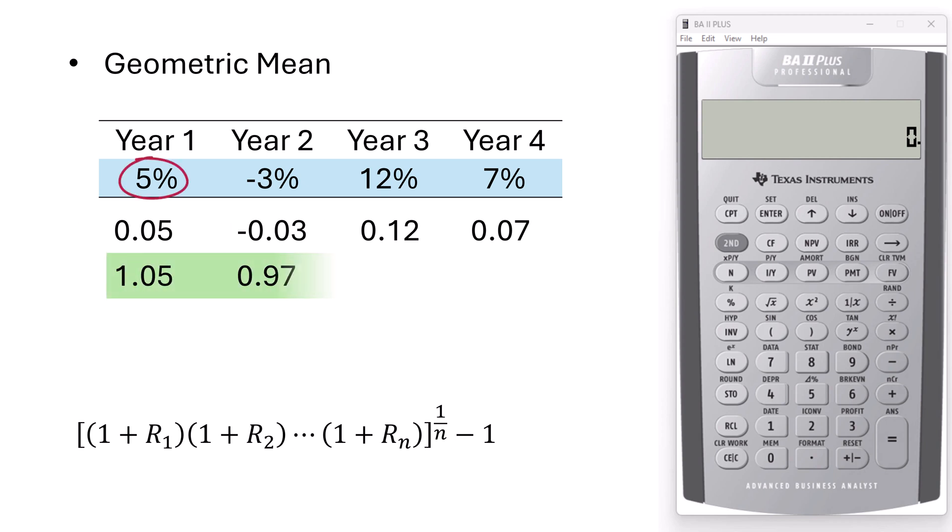So the 5% return results in a compounded value of 1.05. The negative 3% results in a 0.97 compounded value and so on.